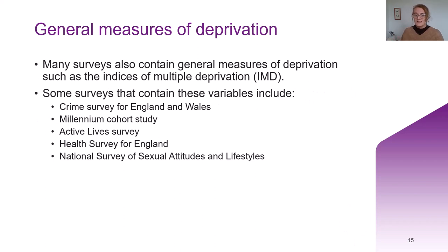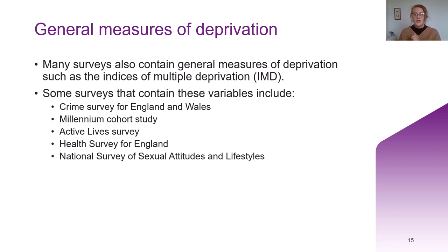Those are examples of some particular studies, but many surveys also contain general measures of deprivation, such as the indices of multiple deprivation. Surveys that contain these measures include the Crime Survey for England and Wales, the Millennium Cohort Study, the Active Lives Survey, the Health Survey for England, and the National Survey of Sexual Attitudes and Lifestyles. There may only be one or two deprivation variables included within them, but they can be really useful if you're wanting to research deprivation alongside other topics — such as looking at the impact of health on deprivation, or how the Active Lives Survey looks at exercise, or how the Millennium Cohort Study follows individuals over the life course.